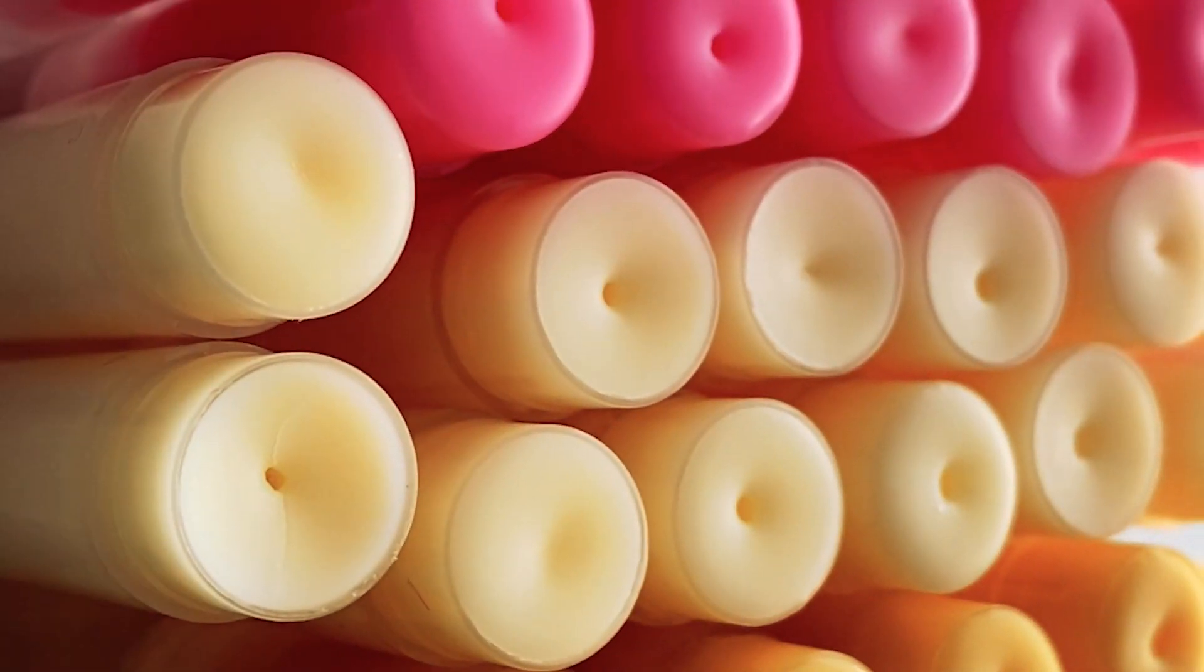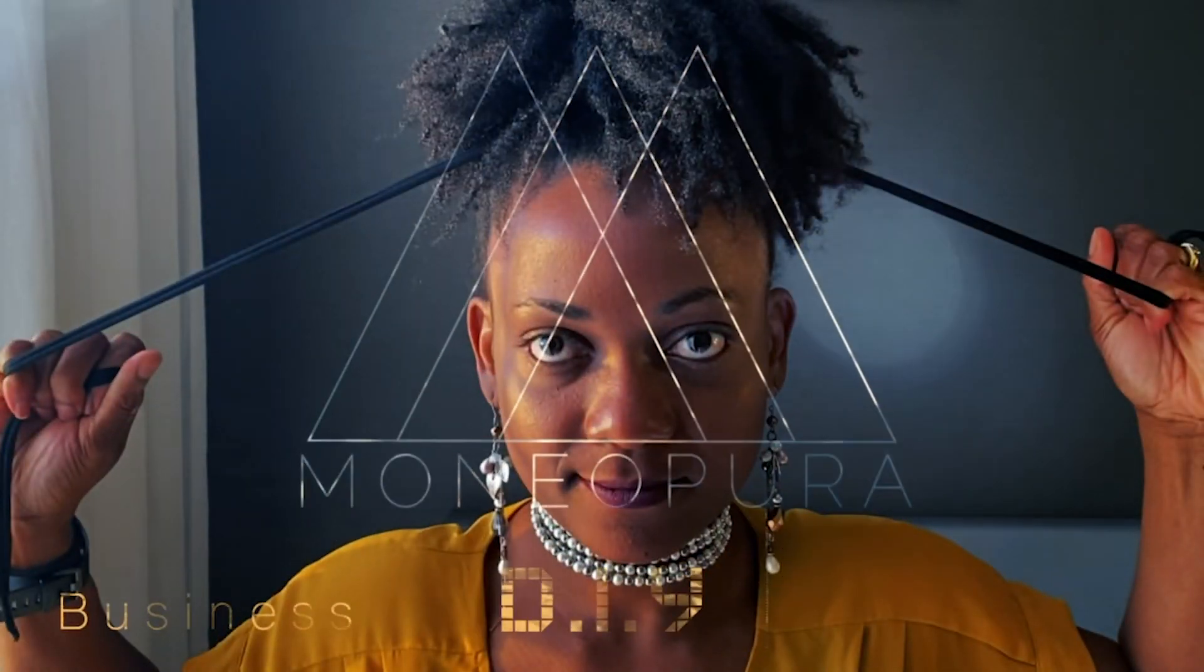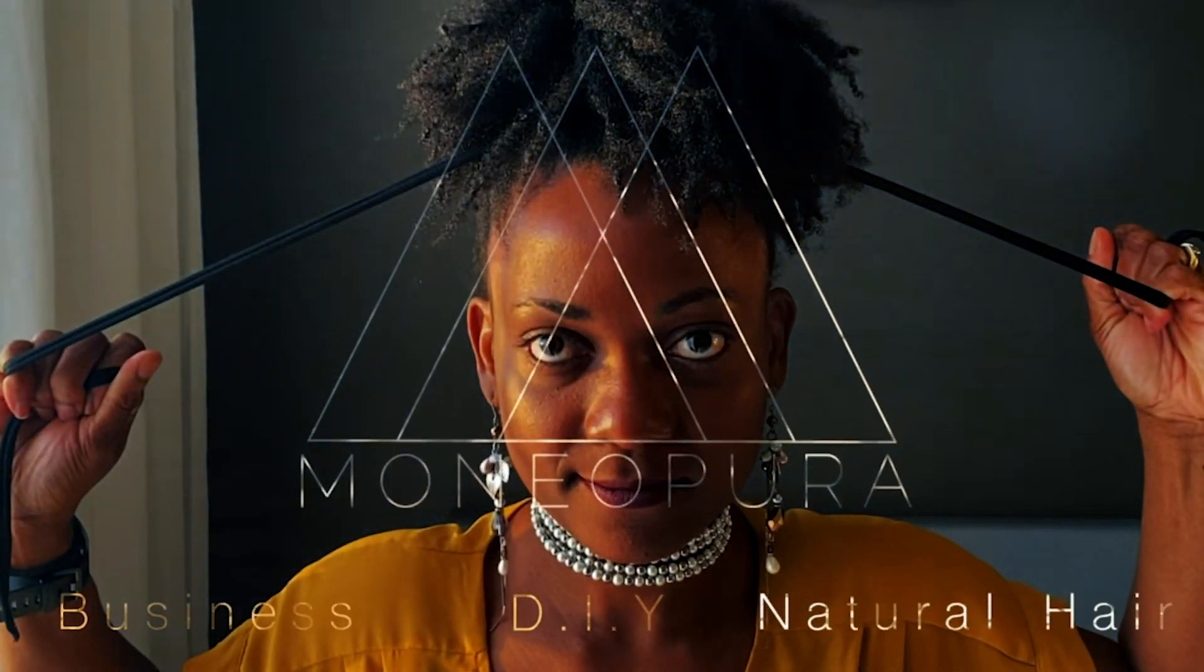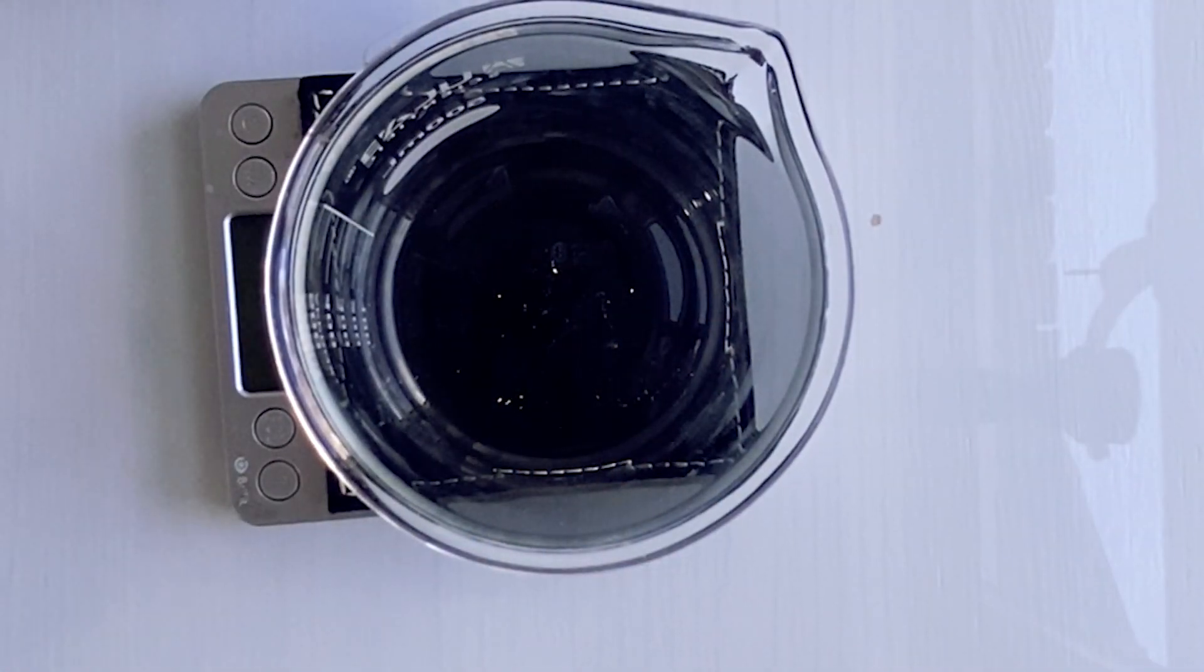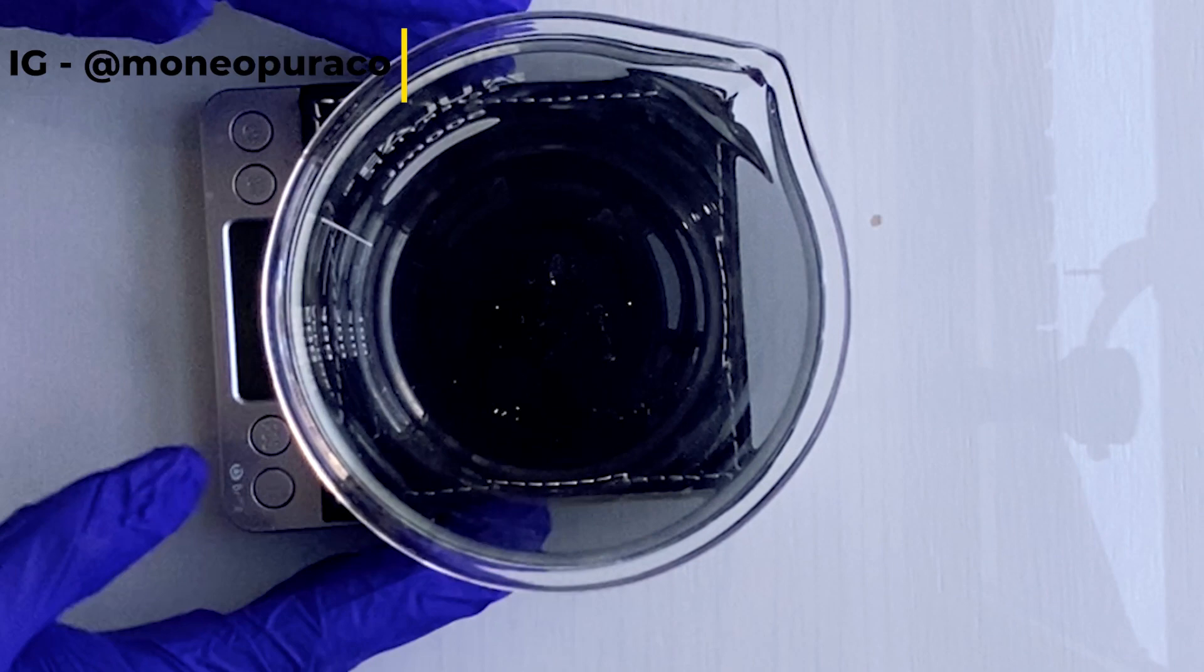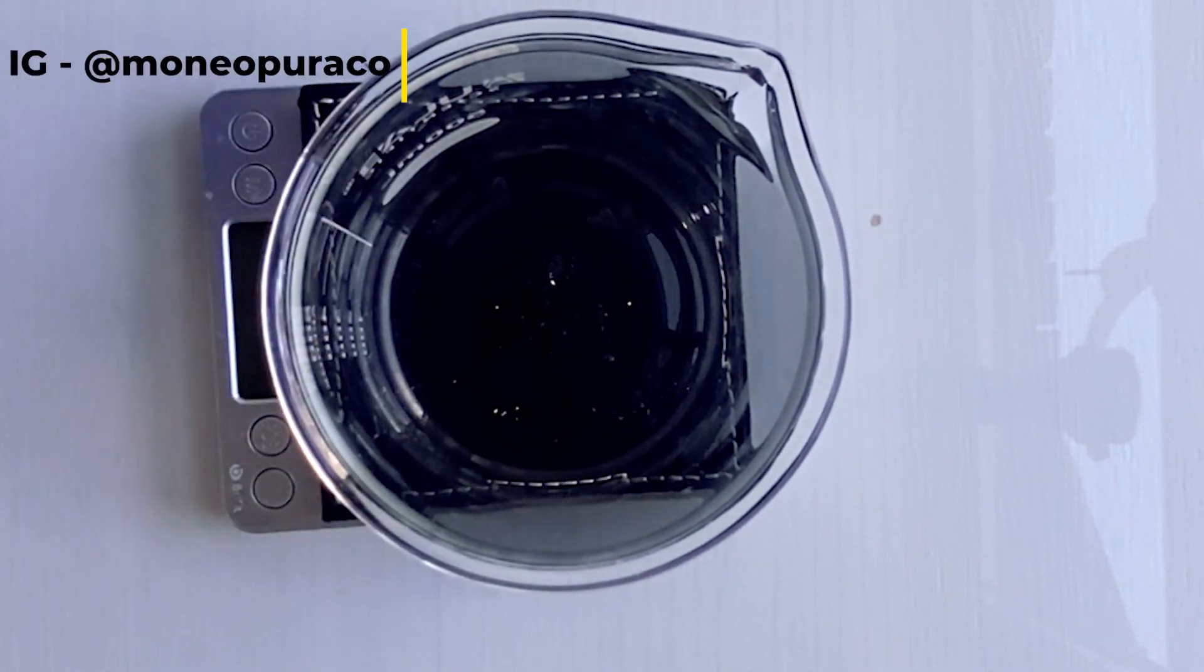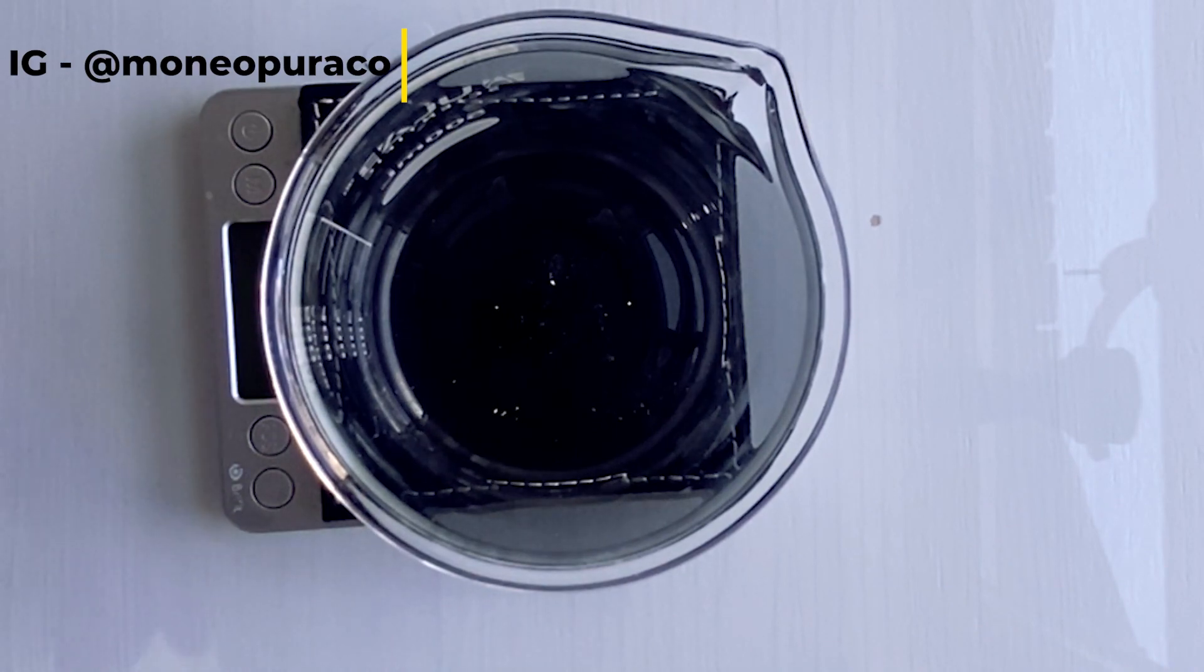To make our lip balm, we're going to be adding all our ingredients to this container, melting it, and once it's all melted we're gonna add our phase two ingredients.